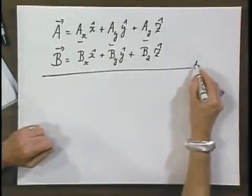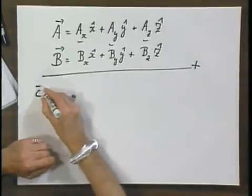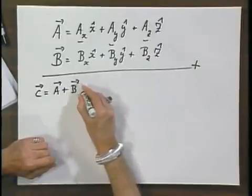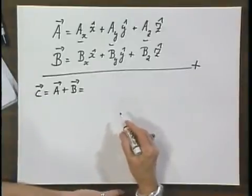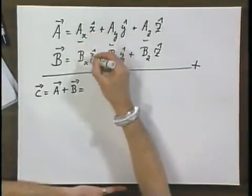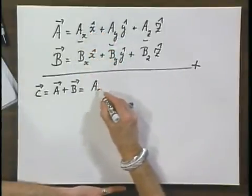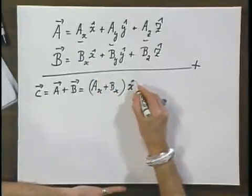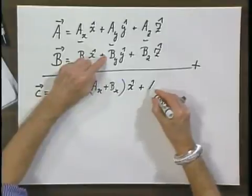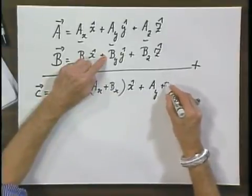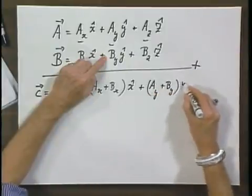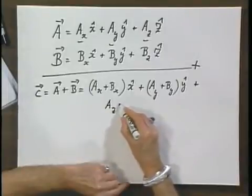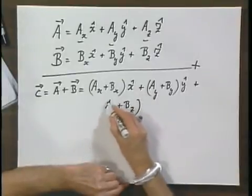And I want to add them. And the vector C equals the sum of these two vectors, A plus B. The addition is now very simple. I add the x components of A and B, and that's the new component in the x direction. I add the y components: A of y plus B of y, y roof, plus A of z plus B of z, z roof.